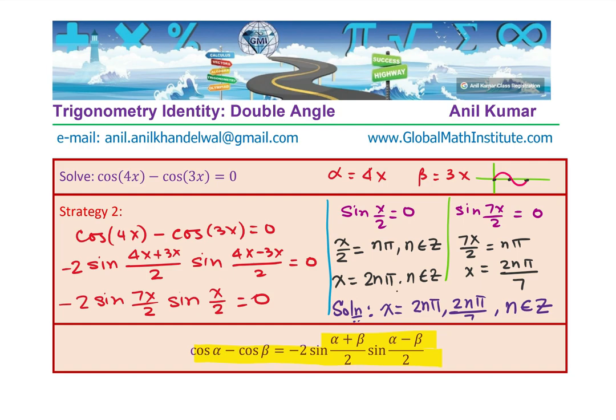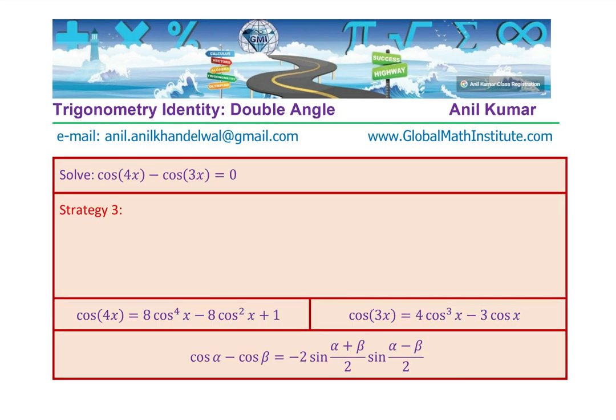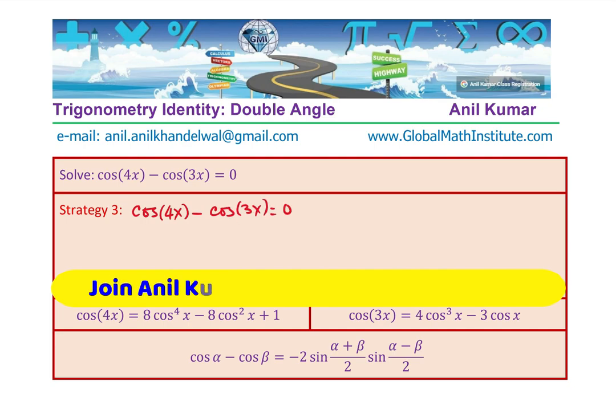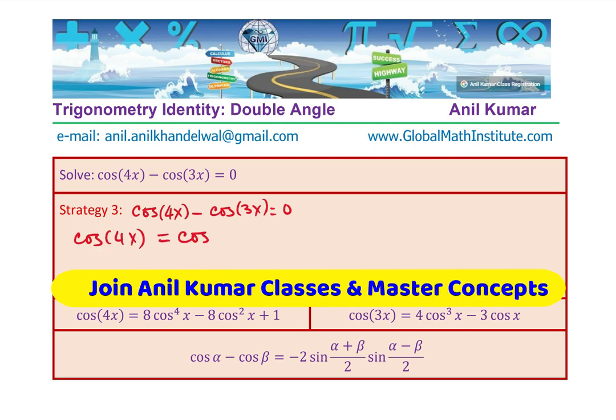What is our strategy number 3 which is used by very smart students. Let me now show you strategy number 3. We need to show that cos of 4x minus cos of 3x equals to 0. Basically, we want to show that cos of 4x is equal to cos of 3x.